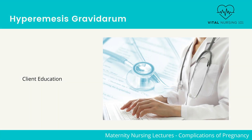Important client education points for hyperemesis gravidarum: nausea and vomiting usually peak between 2 to 12 weeks of pregnancy and go away by the second half of pregnancy. Suggest eating small, frequent meals. Dry foods such as crackers may help relieve uncomplicated nausea. Teach the client to increase fluid intake to prevent dehydration, especially during times of day when they feel less nauseated. Seltzer, ginger ale, or other sparkling waters may also be helpful.